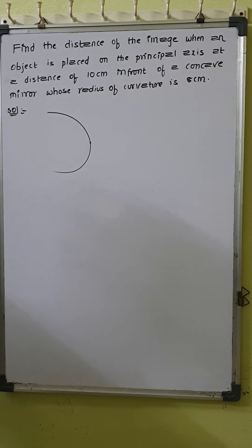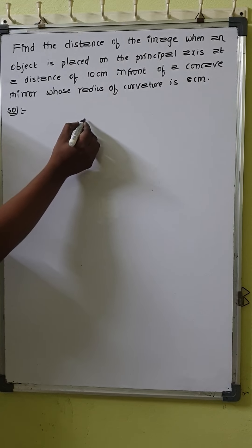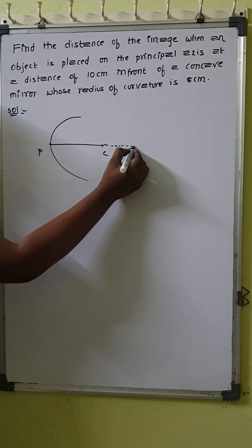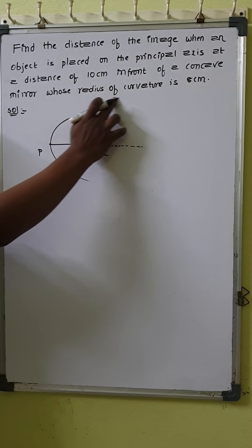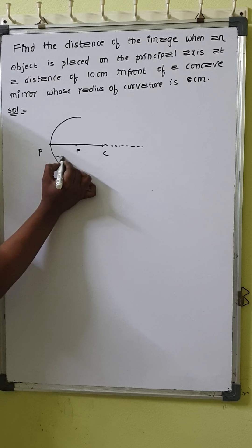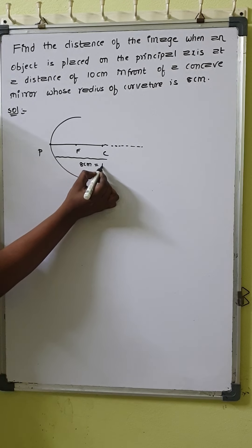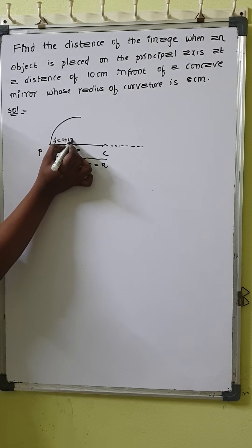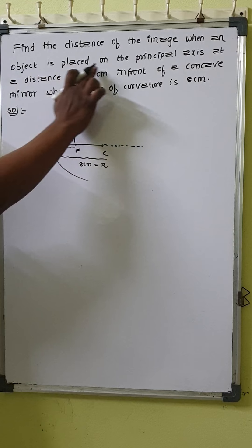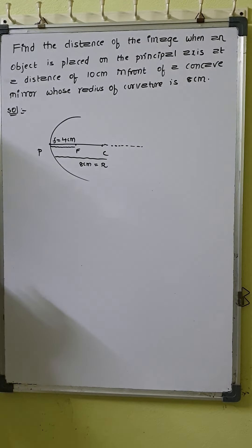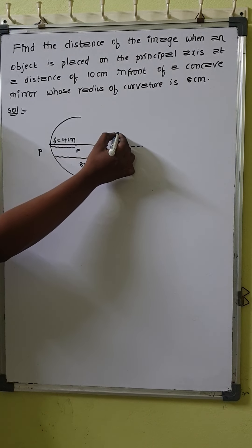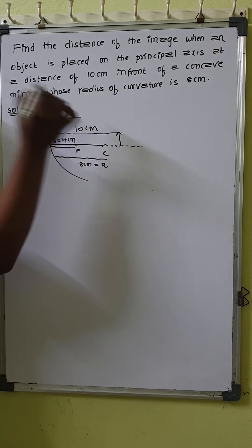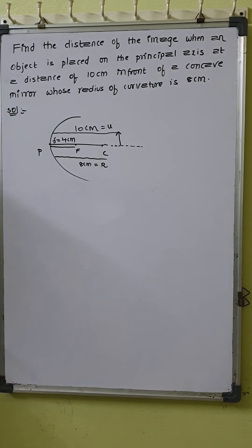Let us first draw a rough diagram of the concave mirror — pole, center, radius, and principal axis. The radius of curvature is 8 centimeters. Since focal length is half of the radius of curvature, focal length will be 4 centimeters. The object is placed at 10 centimeters, which is greater than 8 centimeters, so it lies beyond the center. We have to find the image distance.